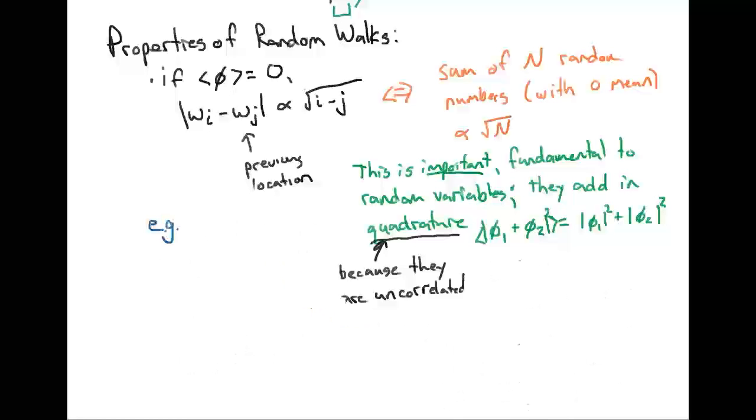A consequence of this is, for example, that diffusion times are proportional to distance squared. Because if you take one random step per unit time and you need to go a certain distance or displacement from where you started, you'll need to take n squared steps to make up that distance.